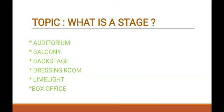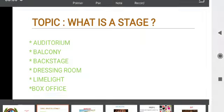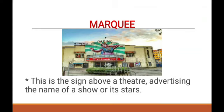Box office — it is used to buy tickets from a person, online, or by phone. Today we also discussed the various components of a theater. First is the marquee — this is a sign about the theater, advertising the name of the show. The marquee is the name of the theater displayed at the front of the theater.